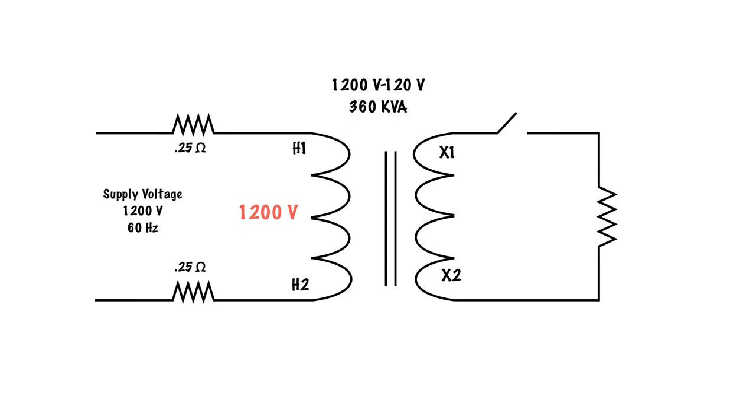1200 divided by the 10 to 1 ratio will give me my secondary voltage, which in this case is obviously going to be 120 because it's a 10 to 1 ratio.